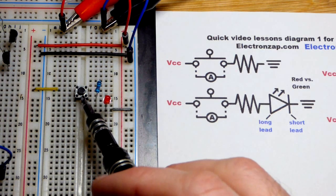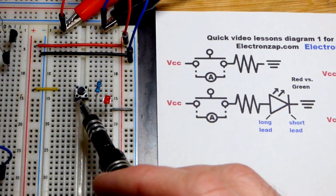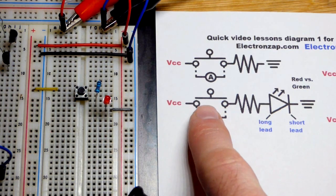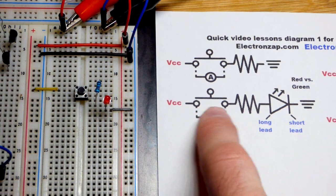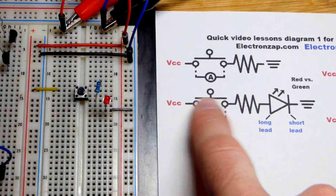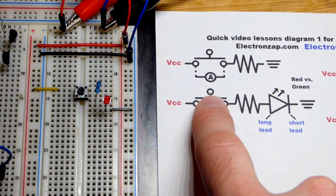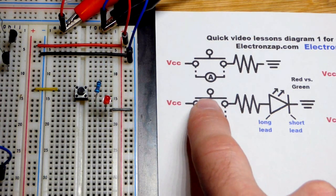In this video we're going to take a quick look at the momentary tactile push button switch. Here's the schematic symbol - we'll get to that in an upcoming video, but you've got a couple dots there and a bar above it with a dot to indicate pushing down the switch.